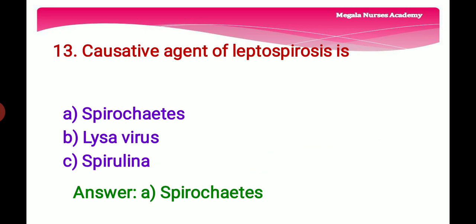Thirteenth question: The causative agent of leptospirosis — Option A: Spirochetes, which cause leptospirosis. Option B: Lyssavirus, which causes rabies. Option C: Spirulina, a biomass of cyanobacteria consumed by humans and animals. The right answer is Option A, spirochetes.